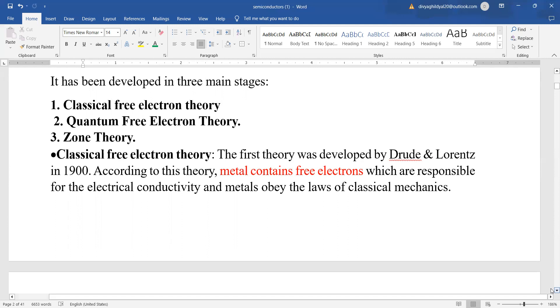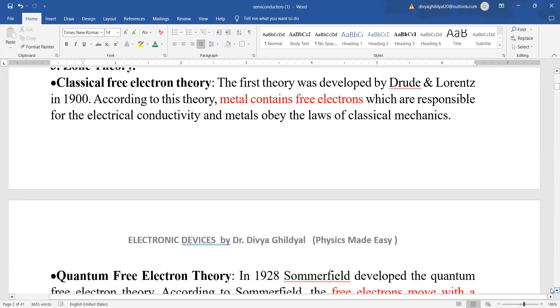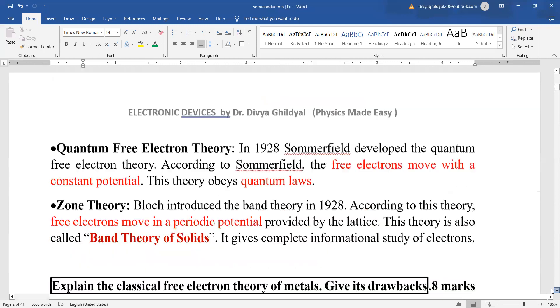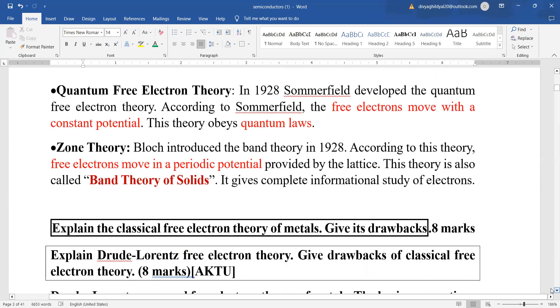Classical free electron theory: The first theory that was developed was the classical free electron theory, which stated that metals contain free electrons which are responsible for the electrical conductivity, and metals obey the laws of classical mechanics. Then came the quantum free electron theory, which said that the free electrons are moving with a constant potential. This theory obeys quantum laws.